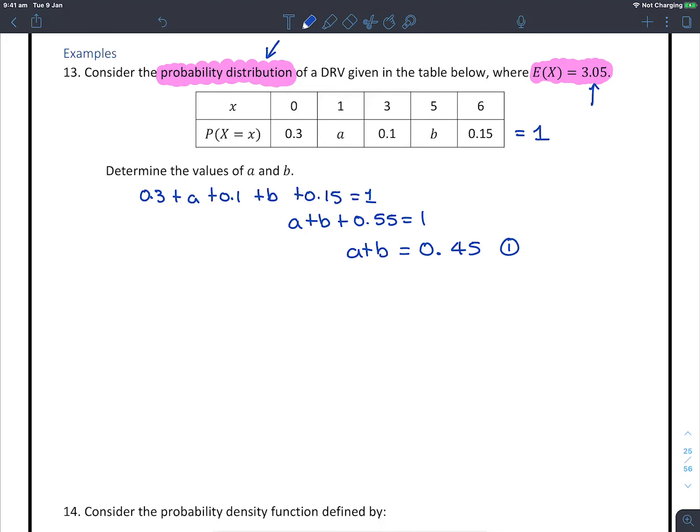Our second equation we're going to get from our expected value. We know that our expected value is 3.05. Using our expected value equation, we know that 0 times 0.3 plus 1 times a plus 3 times 0.1 plus 5 times b plus 6 times 0.15, all of that needs to equal our expected value 3.05.